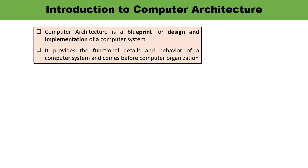Now, computer architecture. Computer architecture can be understood as a blueprint for design and implementation. If you are talking about a computer system, it is the blueprint for the design and implementation — that is known as computer architecture. It provides the details and behavior of a computer system, and it comes before computer organization.